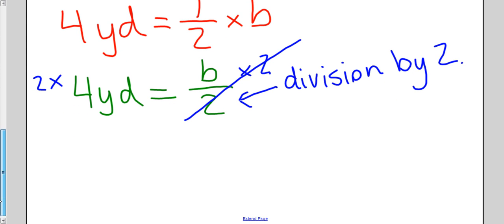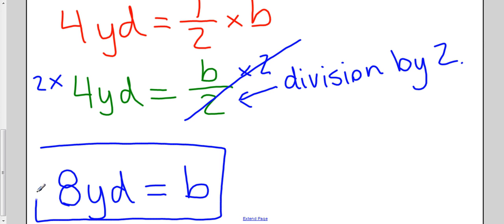Okay, so this multiplication by two cancels out with that division by two. And what am I left with? Well let's simplify here. Two times four is eight. So I have eight yards is equal to b. So my missing dimension, the base of the triangle, is eight yards.